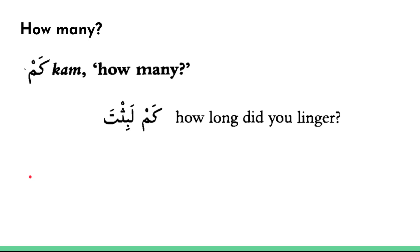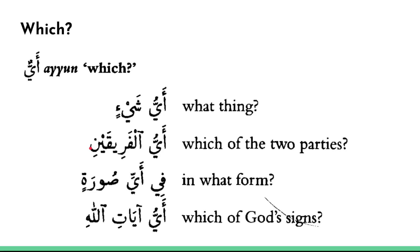Then we have kam, which means 'how many' or 'how long.' Kam labithta means 'how long did you stay?' or 'how long did you linger?' — spoken to a singular person. Next, ayyu is very common and means 'which' or 'what thing.' The word after ayyu is usually in the majroor case, so it almost acts like a possessive. Ayyu shay'in means 'which thing?' and ayyu l-fareeqayni means 'which of the two parties?' — fariqayni being the dual in the majroor case, which would be fareeqaani in the marfoo' case.